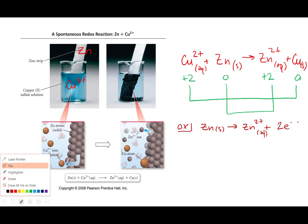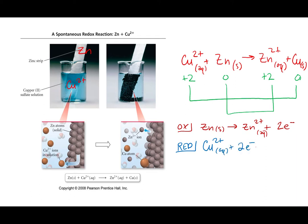And then of course copper was gaining electrons. We call that reduction. So my reduction is copper two plus aqueous plus two electrons goes to copper solid.